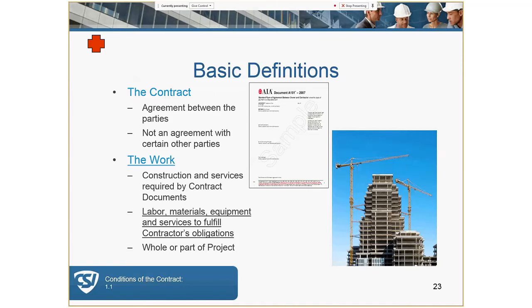The contract documents essentially form the contract for construction. Note that there is no contractual relationship between the architect, consultant, contractor, subcontractor, or material suppliers directly. There is a tripartite relationship through the other third-party agreements, but the AE and the contractor do not have a contract with one another. That's why it's important to get similar contracts from the same family.